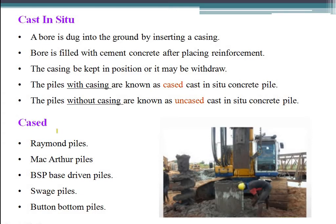For cast in-situ piles, a bore is dug into the ground by inserting a casing. The bore is filled with cement concrete after placing reinforcement. The casing may be kept in position or it may be withdrawn. Piles with casing are known as cased cast in-situ concrete piles. Cased piles include Raymond piles, MacArthur piles, BSP base-driven piles, swage piles, and button bottom piles.